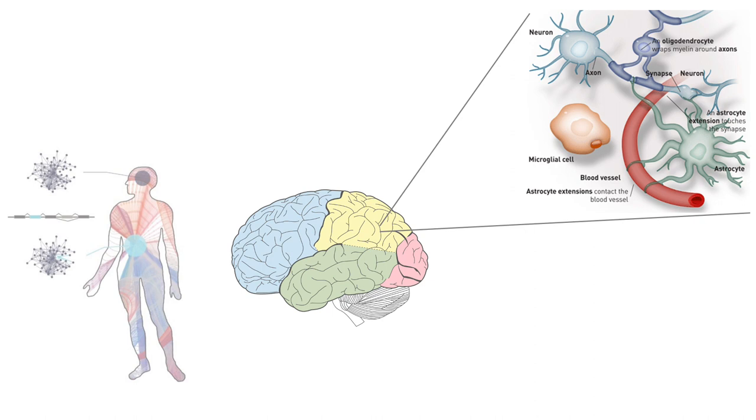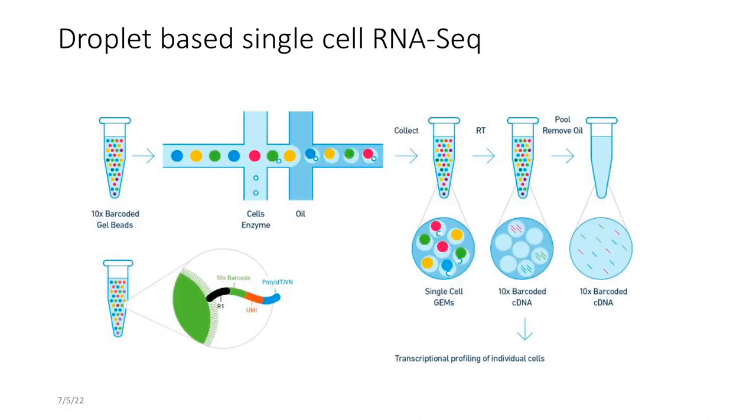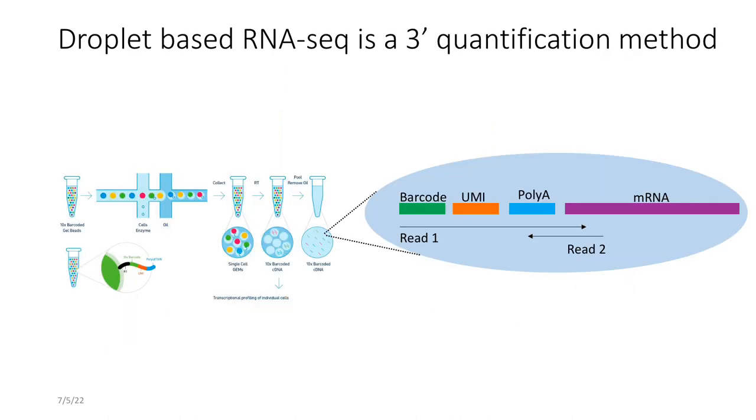So the best way to study anything at a single cell level is to do droplet-based, high-throughput single cell RNA sequencing. And again, I'm sure I don't need to tell you how droplet-based RNA-seq works.